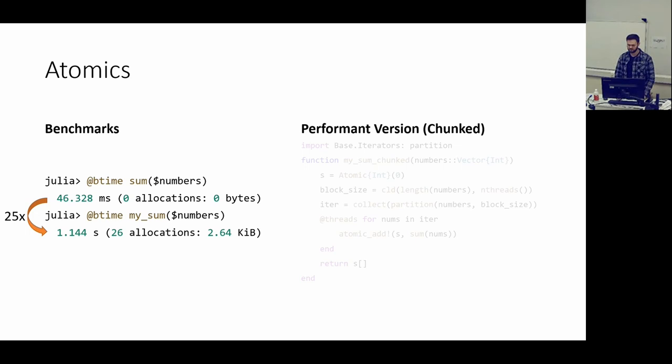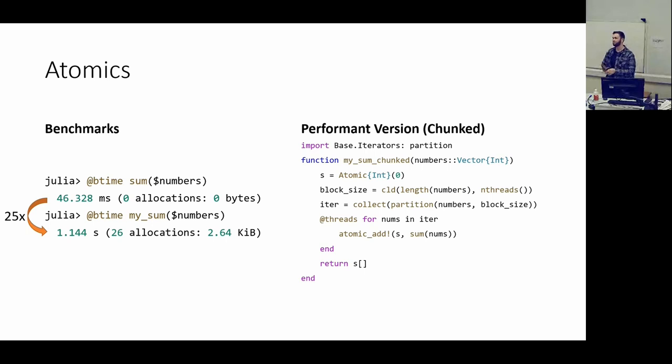Instead of just looping through each element and adding atomically, we'll break the array into smaller partitions. We'll use as many chunks as we have threads, perform the sum on the smaller chunk on each core, and then atomically add that result. So we'll reduce on each core, then do a second reduce when adding to this atomic variable. Before, if you had n numbers, you'd be doing n atomic operations. Now you're just doing as many atomic operations as you have threads, which is usually 4, 8, or 16.